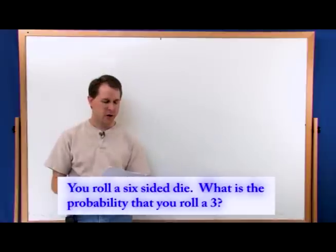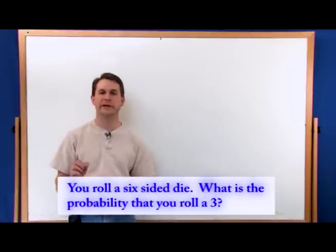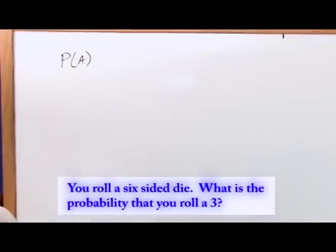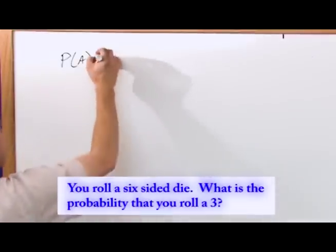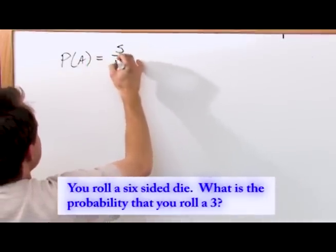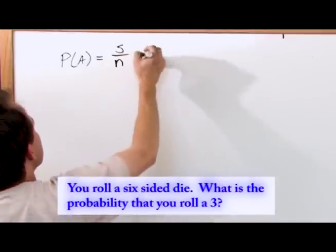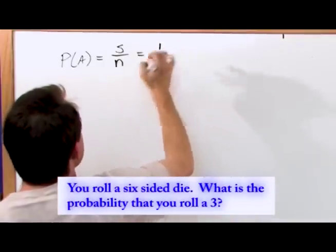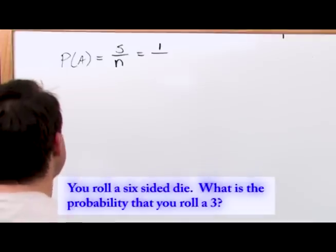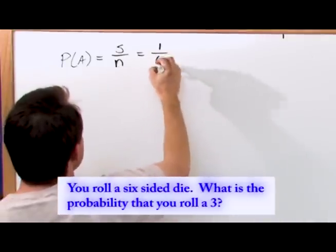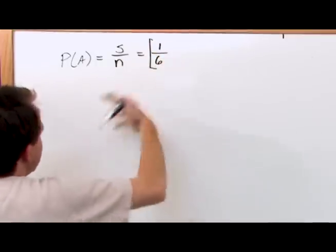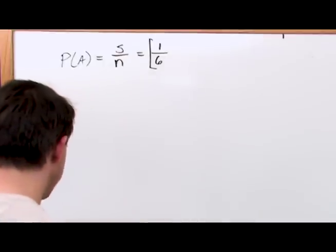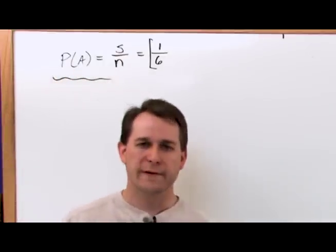You roll a six-sided die — a regular board game die with six sides. What is the probability of rolling a three? Event A is rolling a three. How many ways can that happen? There is only one three on the die, so s equals one. The total number of outcomes is six — the die can land on 1, 2, 3, 4, 5, or 6. So P(A) = 1/6. You can also calculate the probability of not rolling a three as one minus 1/6.